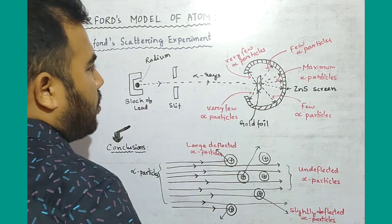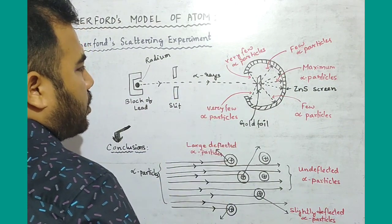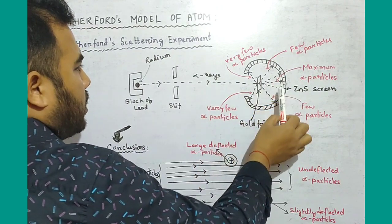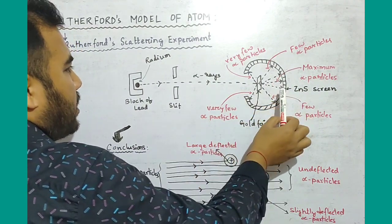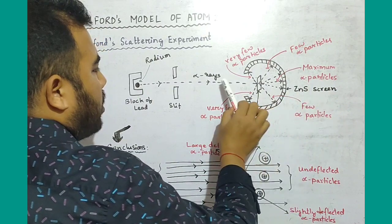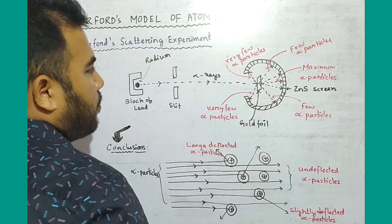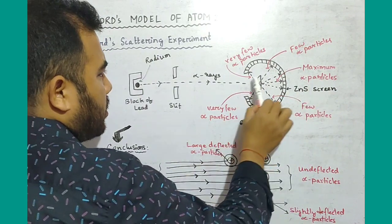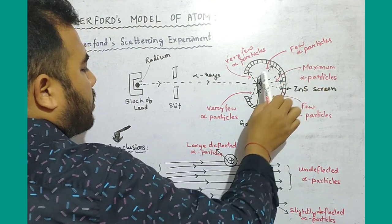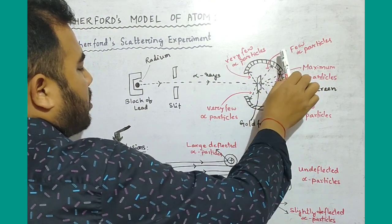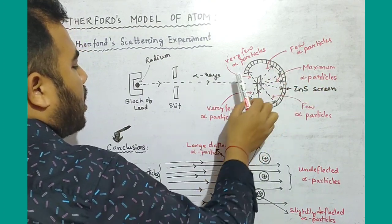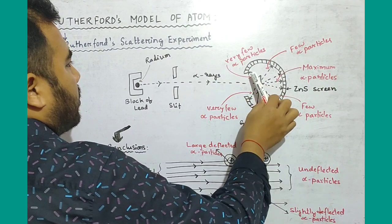The slit allows only alpha rays to pass through. The maximum alpha particles are undeflected. A few alpha particles are slightly deflected, and some are deflected at large angles.